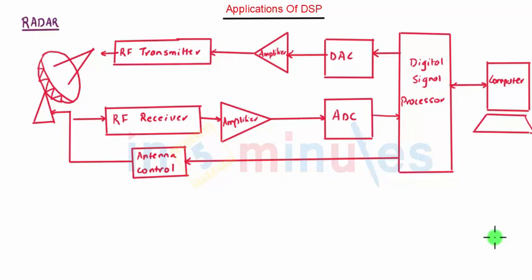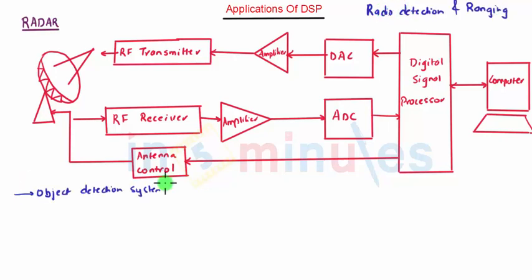Radar stands for Radio Detection and Ranging. Radar is an object detection system which transmits electromagnetic waves in the radio microwave frequency range and analyzes the reflections to determine the range, altitude, direction, or speed.